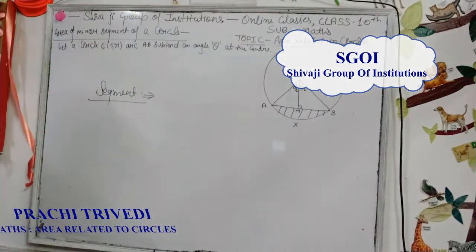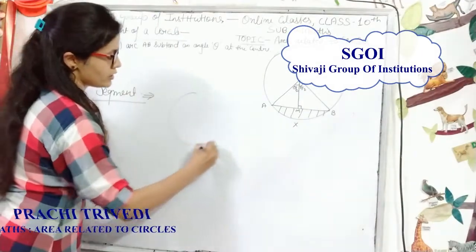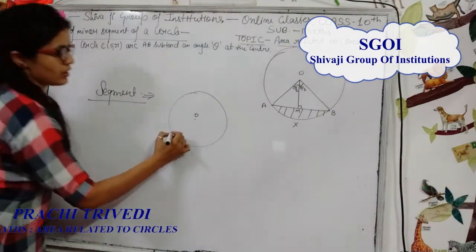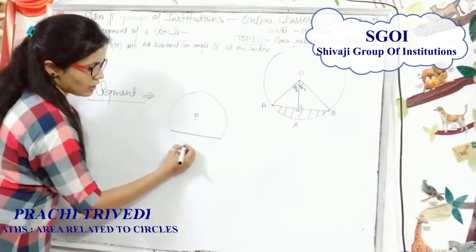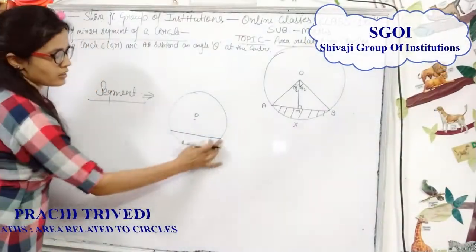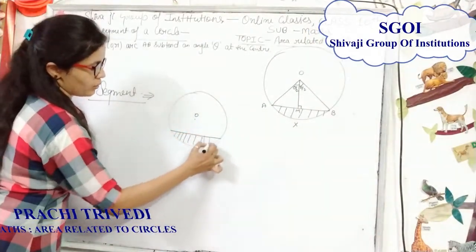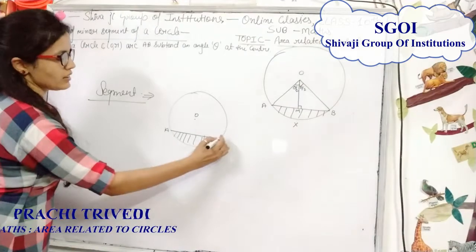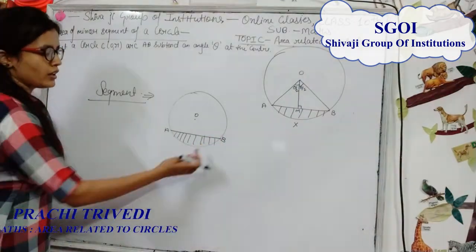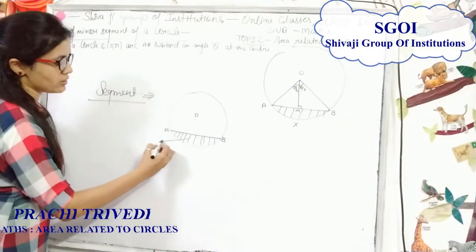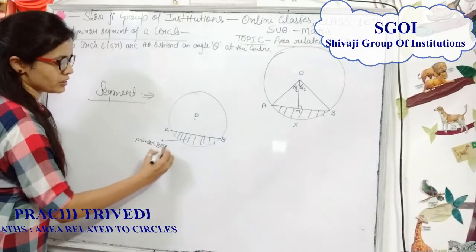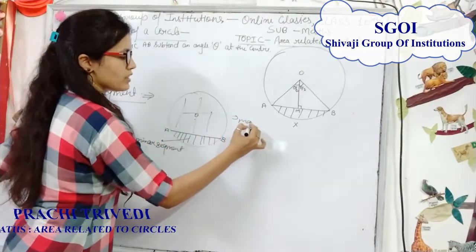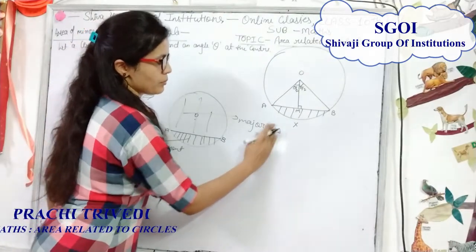Before that, what is a segment? If this is a circle whose center is O, then the region between the chord of a circle and the arc of a circle is called a segment. The region bounded between the chord of the circle and the arc. Here AB is a chord. If AB subtends a minor arc, then this segment is called a minor segment. And if the arc is major, then this is a major segment.